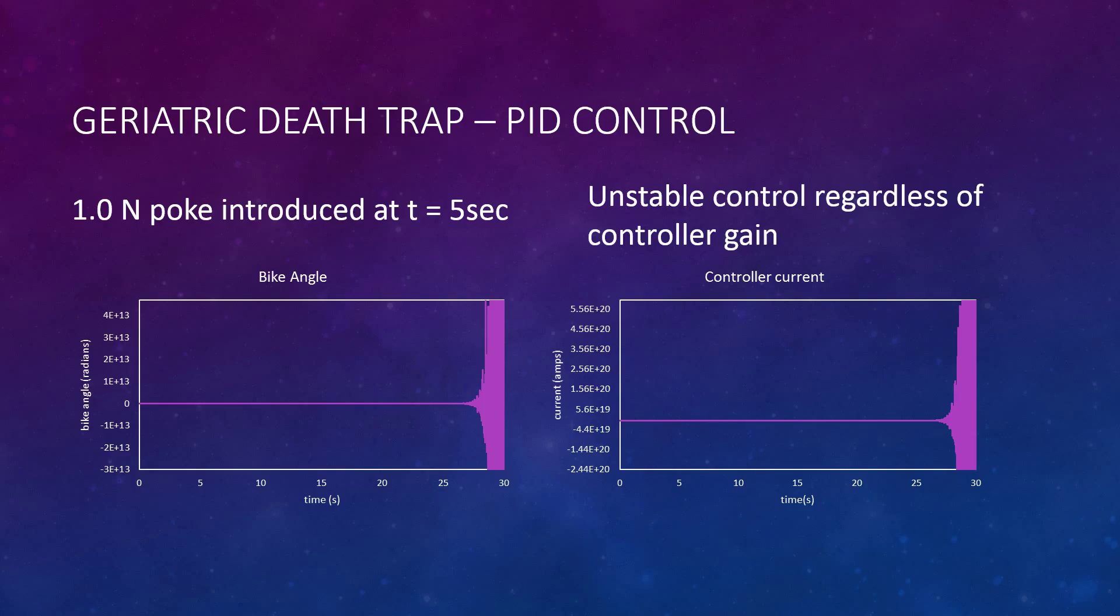And so the first thing we did was we programmed a PID controller to account for some of these disturbances. And we started with pretty simple tests, just a 1 newton little poke right at 5 seconds on these graphs. And so on the left graph you can see the angle of the bicycle measured in radians. And as you can see about 20 seconds after the disturbance, it goes crazy.